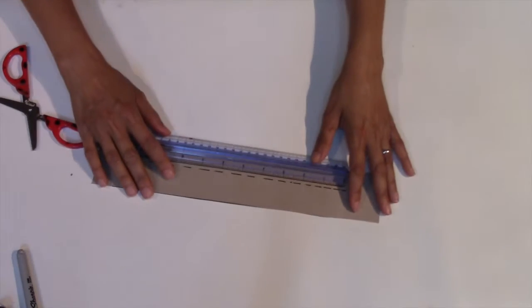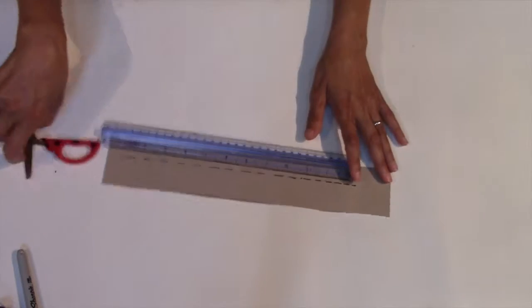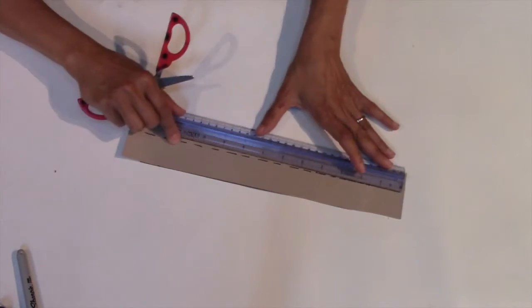In step two, I'll score and fold the ramps. Place a ruler or straight edge along the dashed lines, then carefully run the sharp edge of your scissors along the edge.